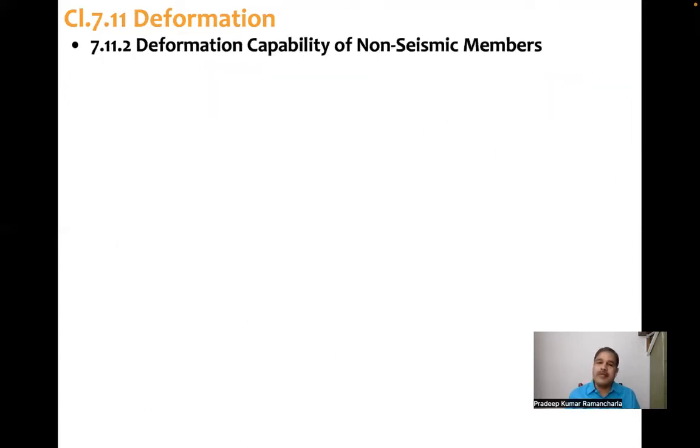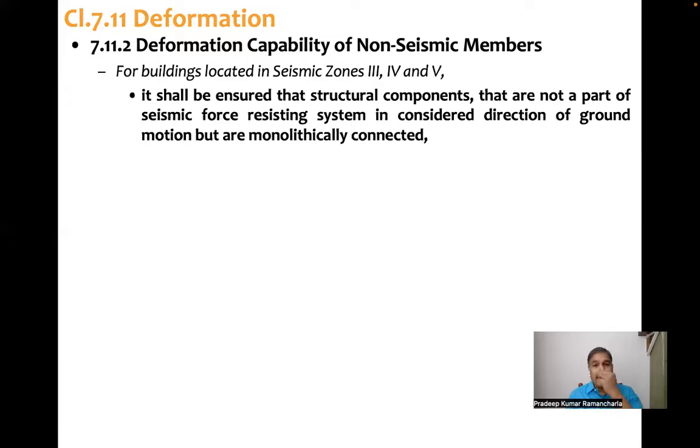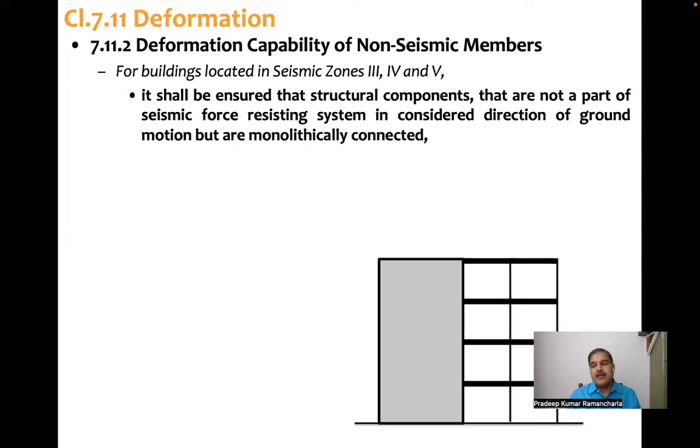Then deformation capability of non-seismic members. So for buildings located in seismic zones 3, 4, and 5, it shall be ensured that structural components that are not a part of seismic force resisting system in considered direction of ground motion but are monolithically connected, like this one.